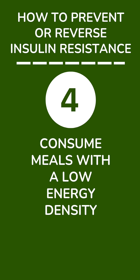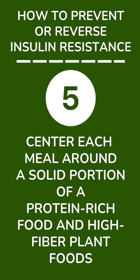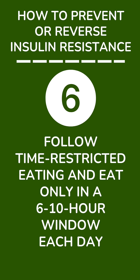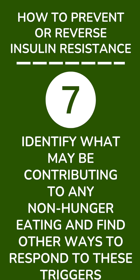Fourth, consume mostly meals with a low energy density by using added fats and oils, added sugars and syrups, and refined grains and starches sparingly. Fifth, center each meal around a solid portion of a protein-rich food and high-fiber plant foods. Sixth, follow time-restricted eating and eat only in a 6–10 hour window each day. And seventh, identify what may be contributing to any non-hunger eating and find other ways to respond to these triggers.